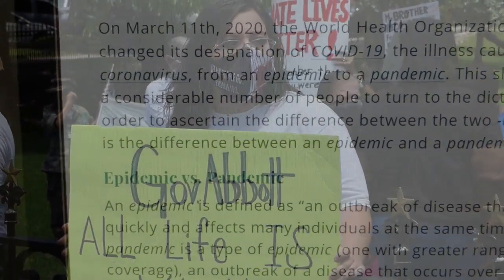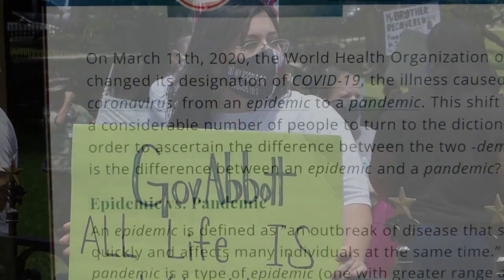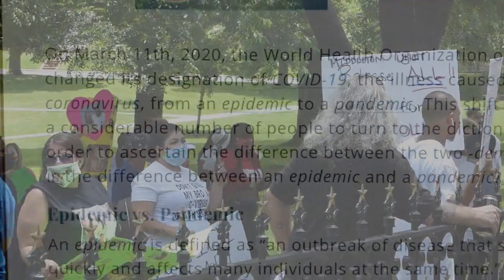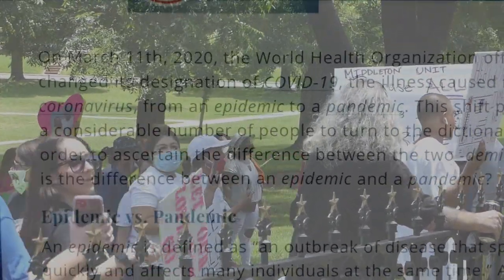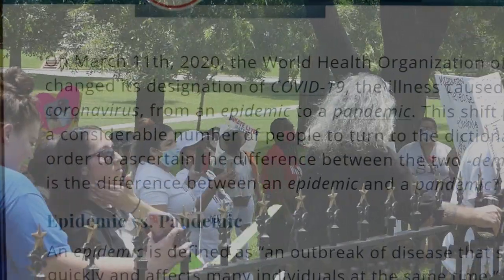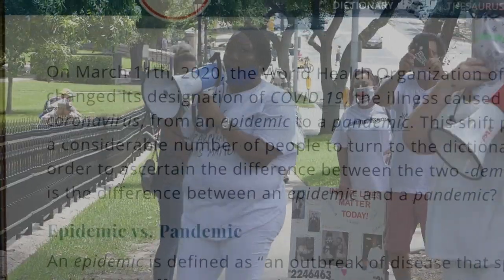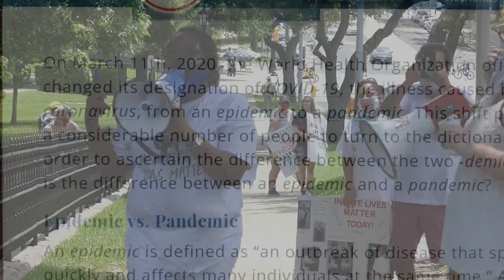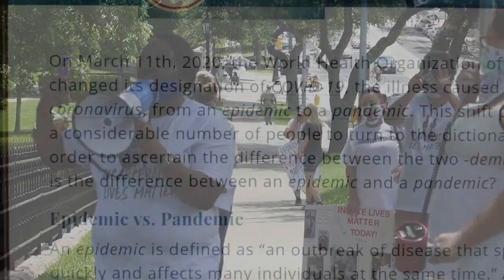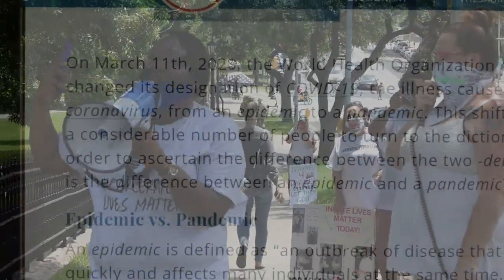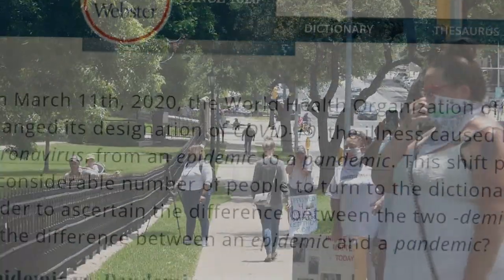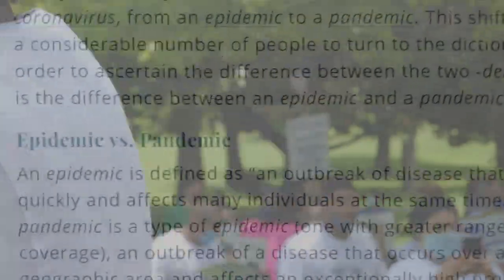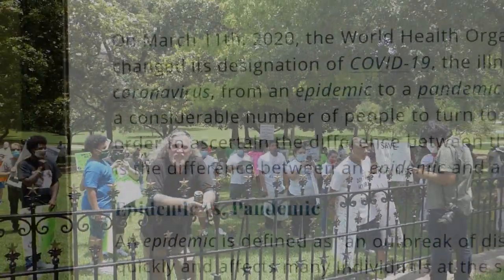On March 11, 2020, the WHO officially changed its designation of COVID-19, the illness caused by coronavirus, from an epidemic to a pandemic. This shift prompted a considerable number of people to turn to the dictionary in order to ascertain the difference between the two. What is the difference between an epidemic and a pandemic?